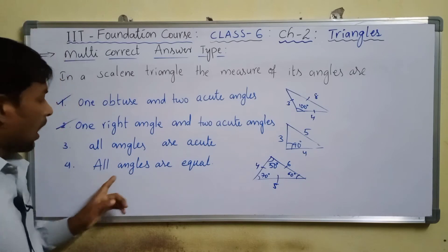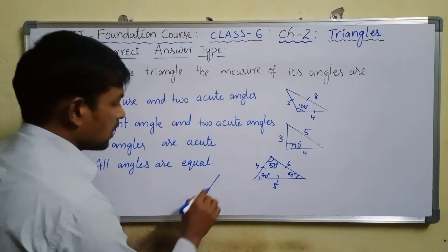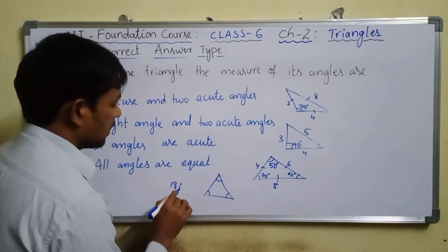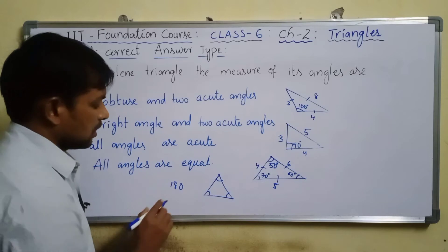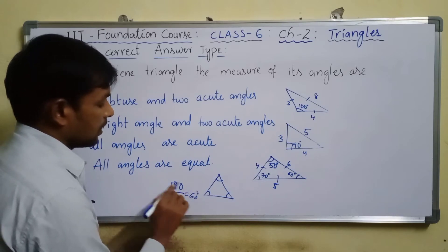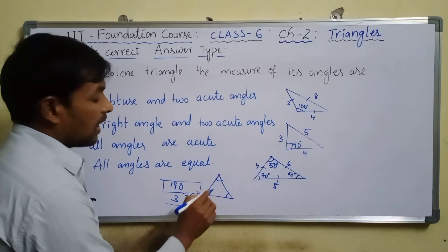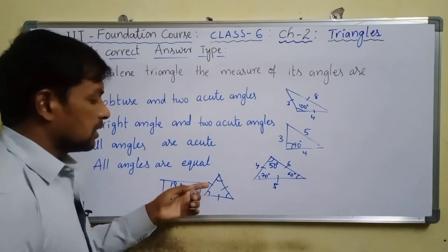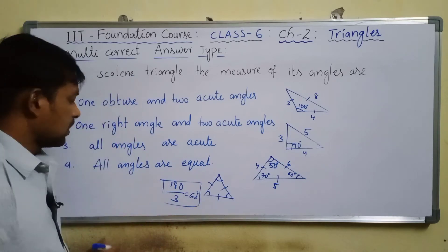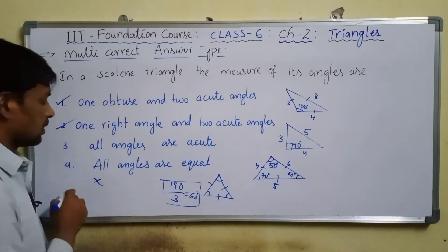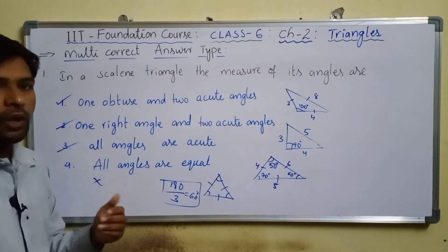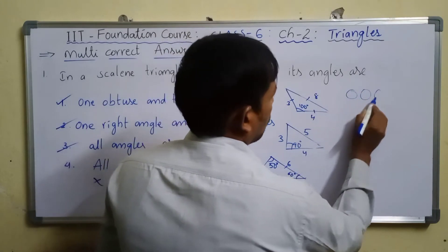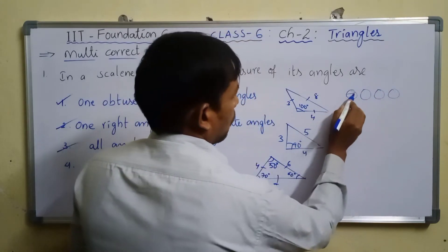For option four, all angles equal: in a triangle the sum of angles is 180°, so equal angles would each be 60°. But if all angles are equal, all sides are also equal — that's an equilateral triangle, not a scalene triangle. So option four is not possible. The correct answers are options one, two, and three.